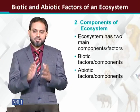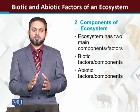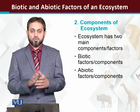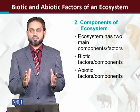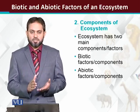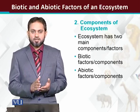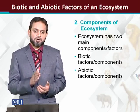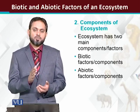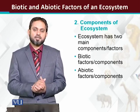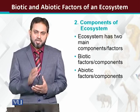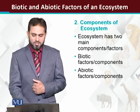Broadly, ecosystems have two main types of components. There are two parts: one is the living components, which are called the biotic factors. And the non-living components are called the abiotic factors.